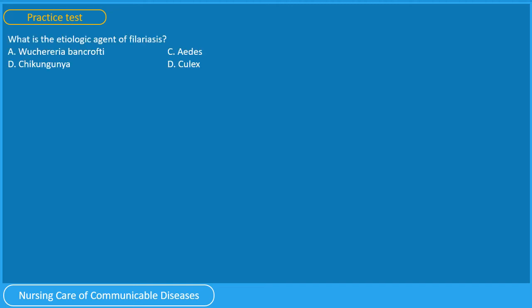Question 1: What is the etiologic agent of filariasis? A. Wuchereria bancrofti, B. Chikungunya, C. Aedes, or D. Culex? You have 5 seconds. The correct answer is A, Wuchereria bancrofti.